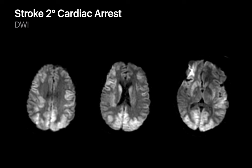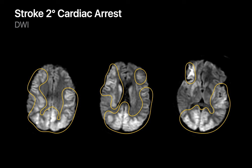In this example, systemic hypoperfusion in the setting of a cardiac arrest has resulted in an ischemic stroke that diffusely involves large regions of both hemispheres in a distribution that does not correlate with any individual cerebral artery. Large regions of increased signal are present in both hemispheres on these diffusion-weighted images.